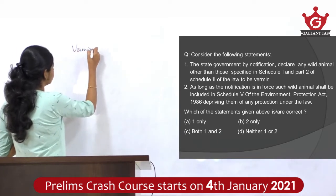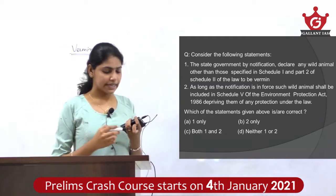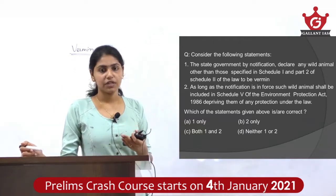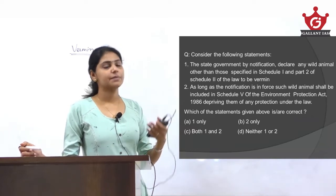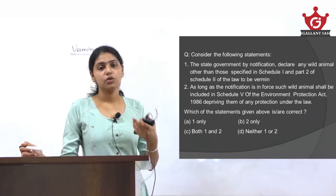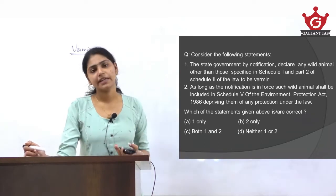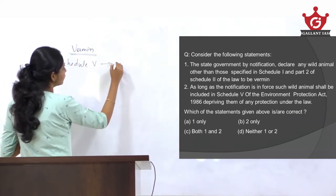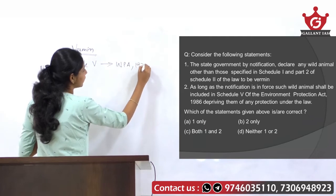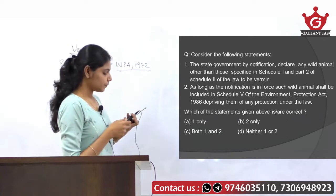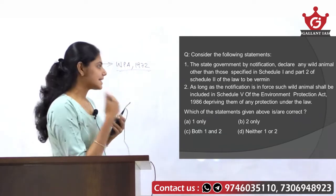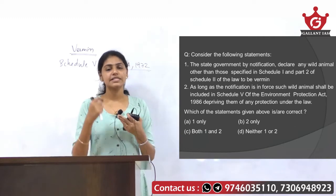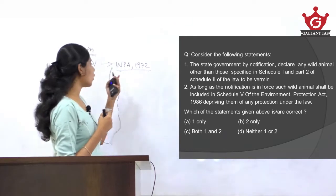The question is with regard to the vermin category. Any wild animal which poses a threat to humans as well as their livelihoods can be declared as vermin for performing selective slaughter. Especially if animals cause a threat to human livelihood like farming, they can be declared vermin under Schedule 5 of the Wildlife Protection Act 1972. According to the provisions of the law, the state can send the list of such wild animals to the centre requesting it to declare such animals as vermin.